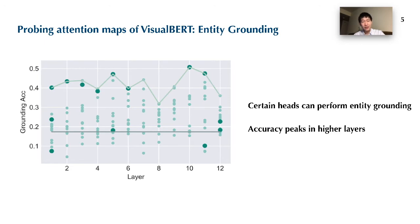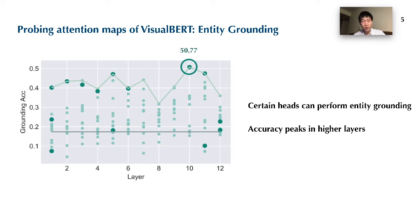To quantitatively verify such phenomena, we use a development set of Flickr 30K as a test bed. For each image and caption in the dataset, alignments between entities and regions are annotated. Visual BERT has multiple attention heads, and different attention heads have different attention weights. So for each attention head, we test if the entity is attending most to the correct image region. We report the accuracy in a graph where each data point corresponds to one attention head, grouped by the layer they belong to. The best heads achieve an accuracy of over 50%, well above the baseline of always guessing the most confidently detected region, which is drawn as a gray line.